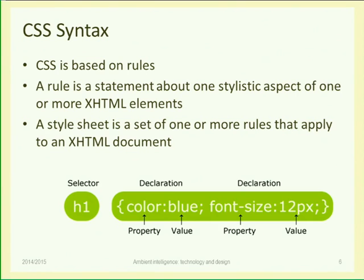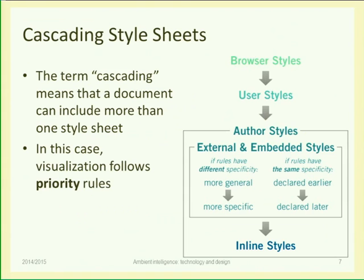So a CSS is basically a long set of rules applied in the same way. A selector selects some elements in the page, and the action modifies some parameters. These properties are defined in a standard way, and every HTML element has a specific set of properties depending on what kind of element it is.